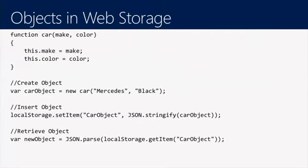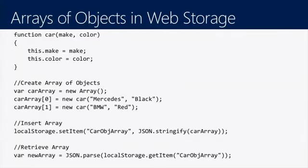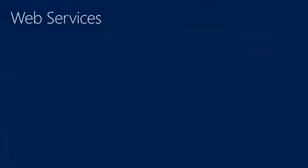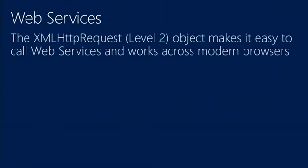You can also do objects in web storage — not just arrays. Here's a JavaScript car object with make and color. You new up the object, create a black Mercedes, and use the same stringify thing to stringify the object as JSON. And arrays of objects — here you build your function, which is how we do objects in JavaScript, put objects in an array so now you have an array of objects, then stringify those and pull them out. I wonder why you'd want an array of objects. Well, maybe we'll find out a little later.